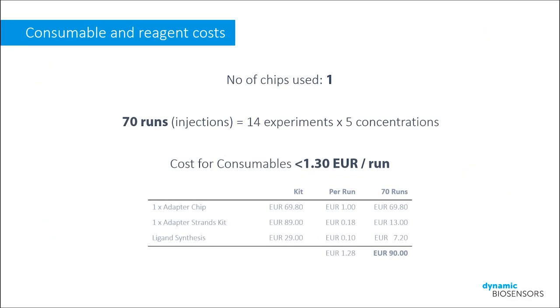Here we can see a tally of all the reagent costs for the experiment we've just completed. With a total cost of €90 for 70 runs, we have a final per-run cost of just under €1.30.